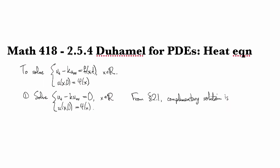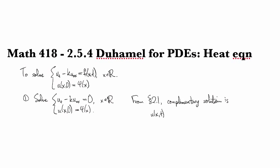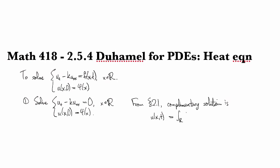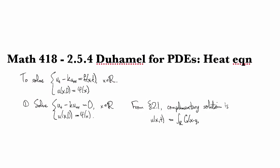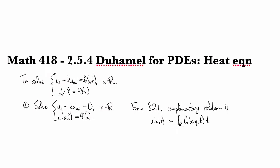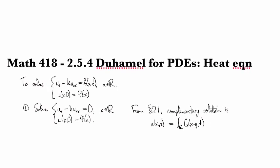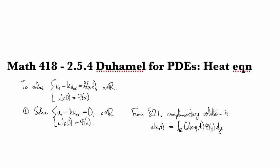is given by integrating or convolving the heat kernel. So, g(x minus y, t) against our initial condition. Alright,